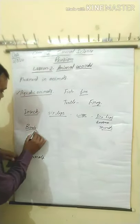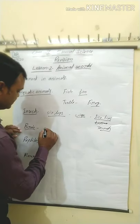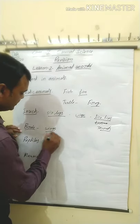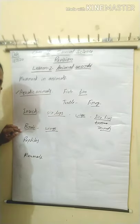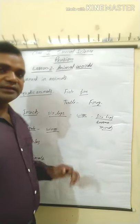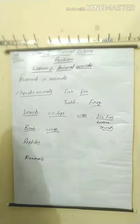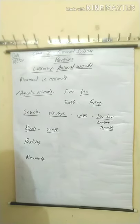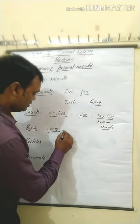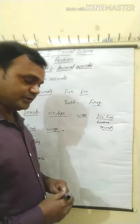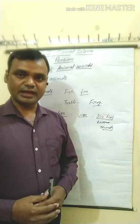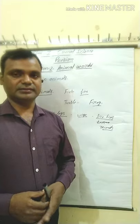Next: Birds. Birds have wings. With the help of wings, they fly in the air easily. Their bones are hollow and their body weight is very light, which helps them in flying.